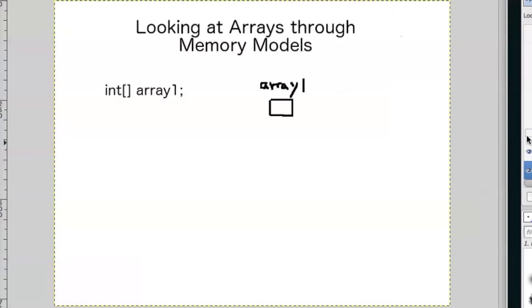So let's go ahead and create array2. So again, it's the same thing. This one's called array2. And again, it doesn't point to anything right now.